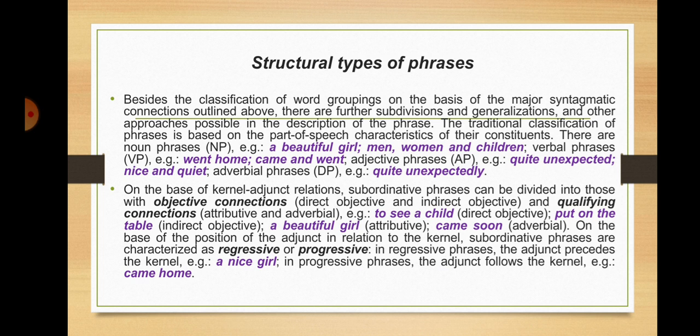Besides the classification of word groupings on the basis of major syntagmatic connections, there are further subdivisions and other approaches in the description of the phrase. The traditional classification of phrases is based on the part-of-speech characteristics of their constituents: noun phrases (e.g., 'a beautiful girl,' 'men, women and children'), verbal phrases ('went home,' 'came and went'), adjective phrases ('quite unexpected,' 'nice and quiet'), and adverbial phrases ('quite unexpectedly'). On the basis of kernel-adjunct relations, subordinative phrases can be divided into those with objective connections — direct-objective and indirect-objective — and qualifying connections — attributive and adverbial.